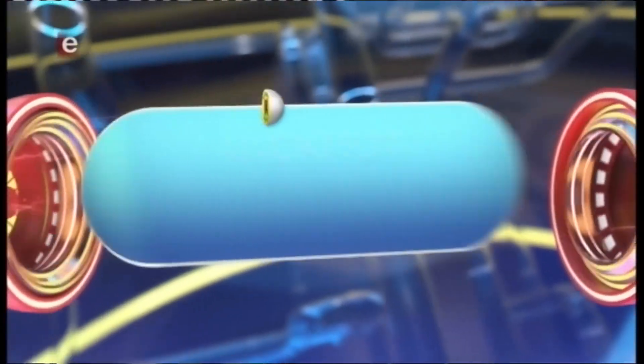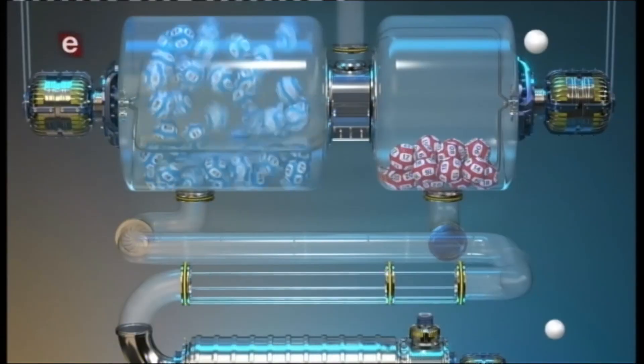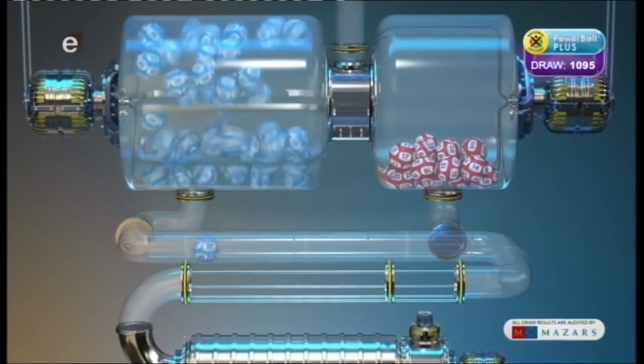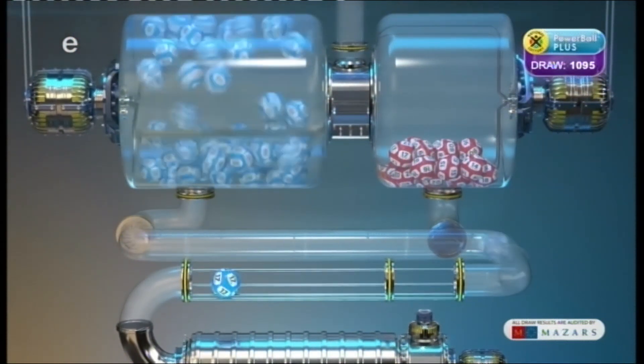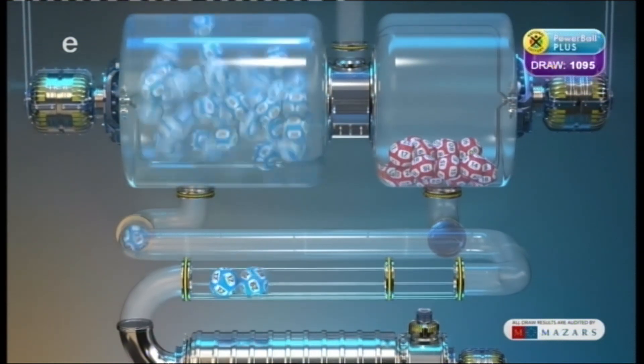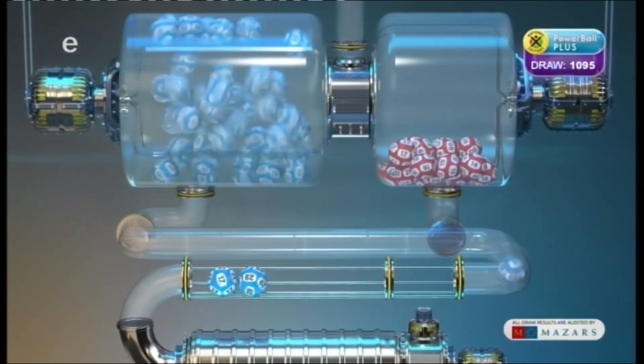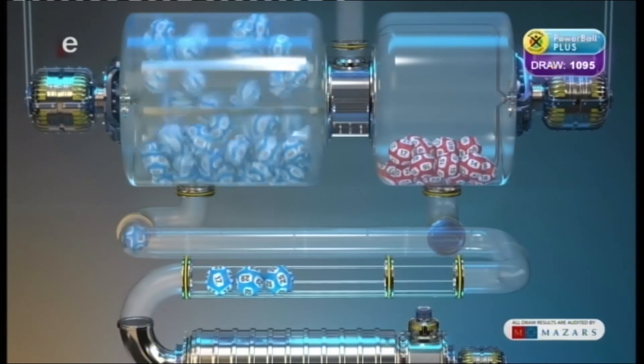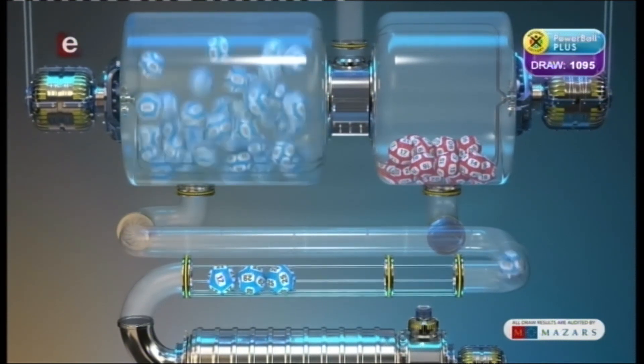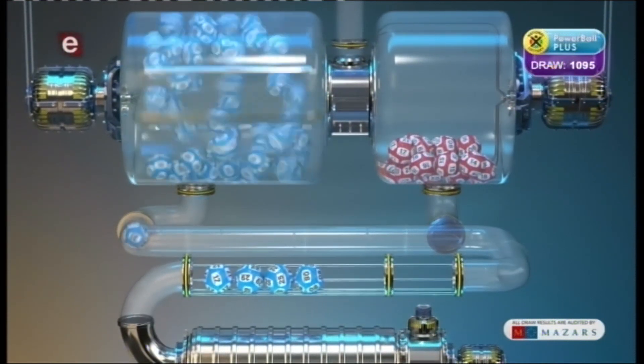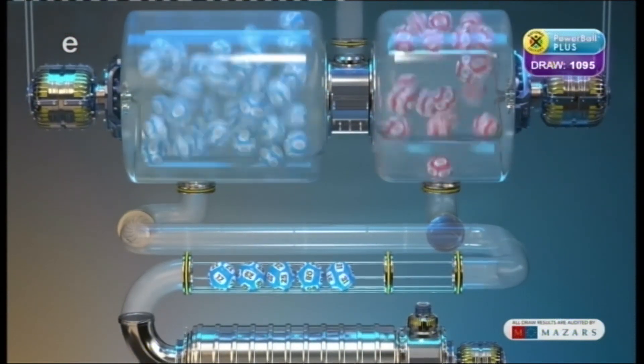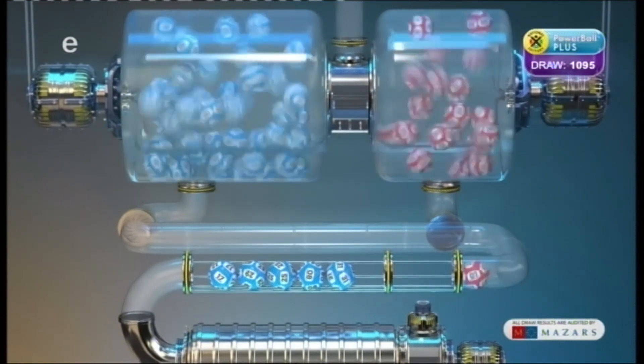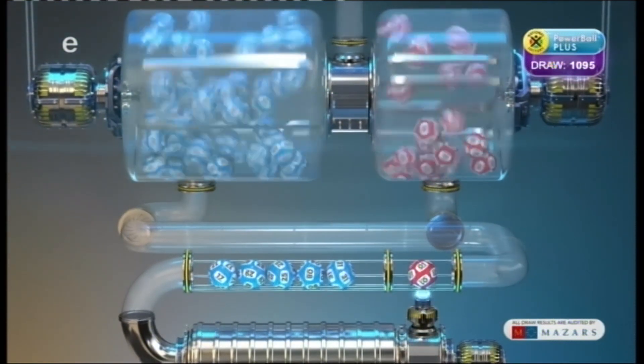The Powerball Plus numbers are: 17, 29, 25, 8, 31. And the Powerball is 1.